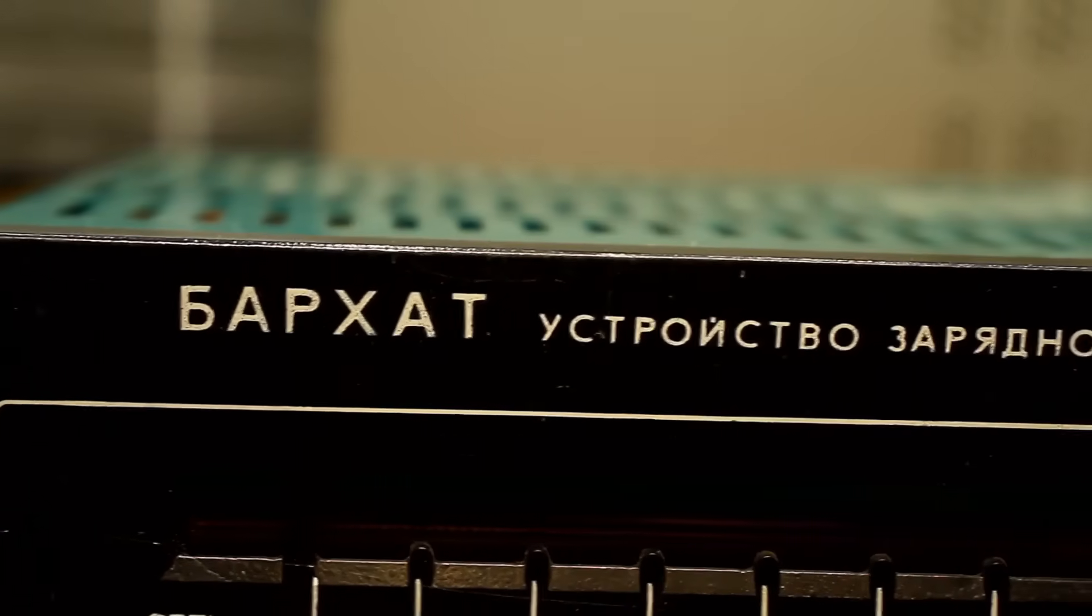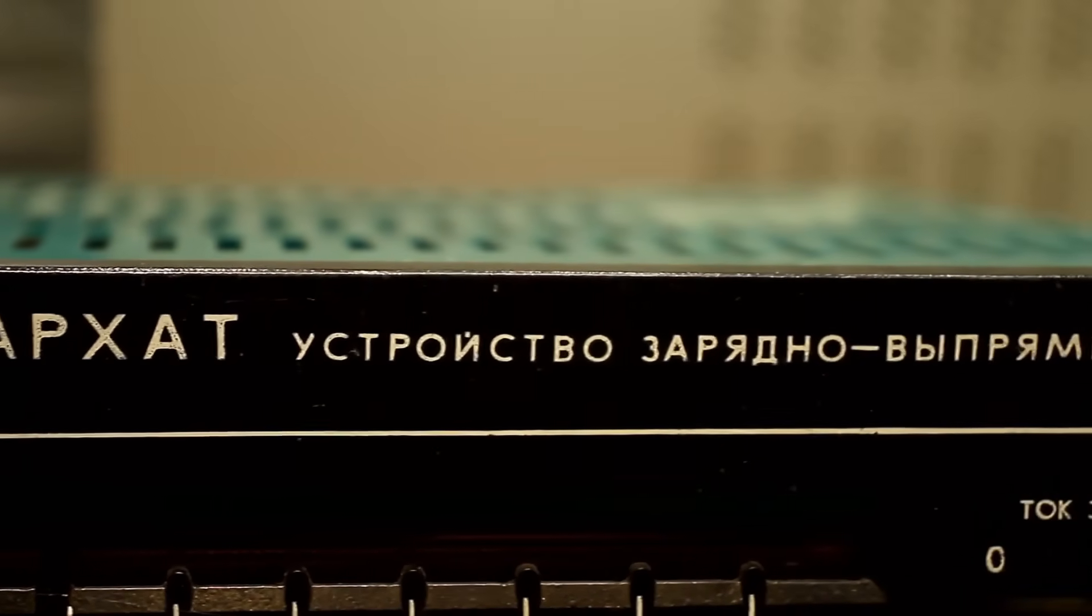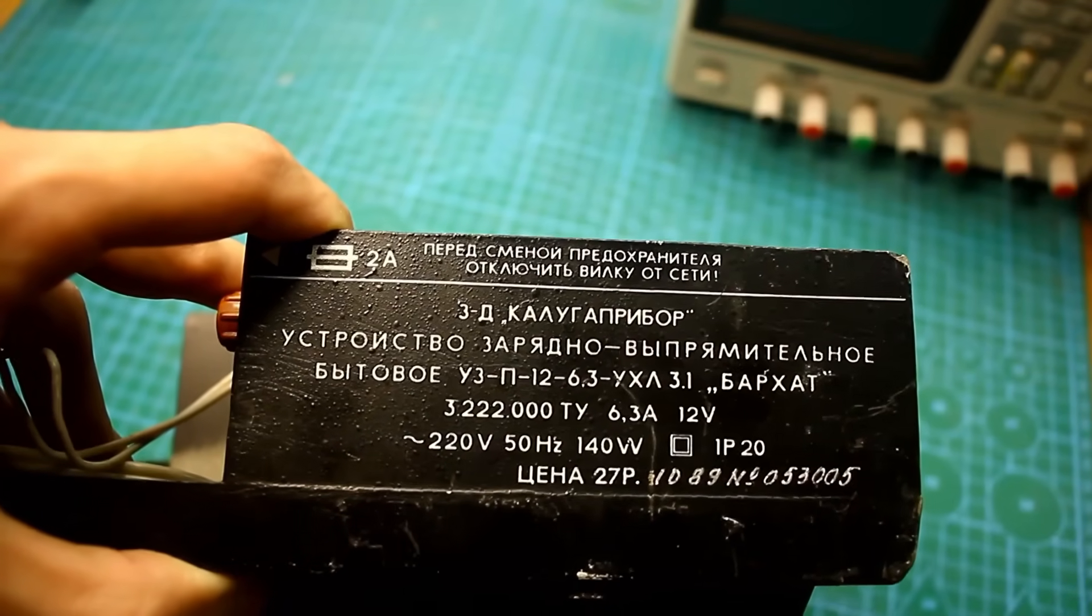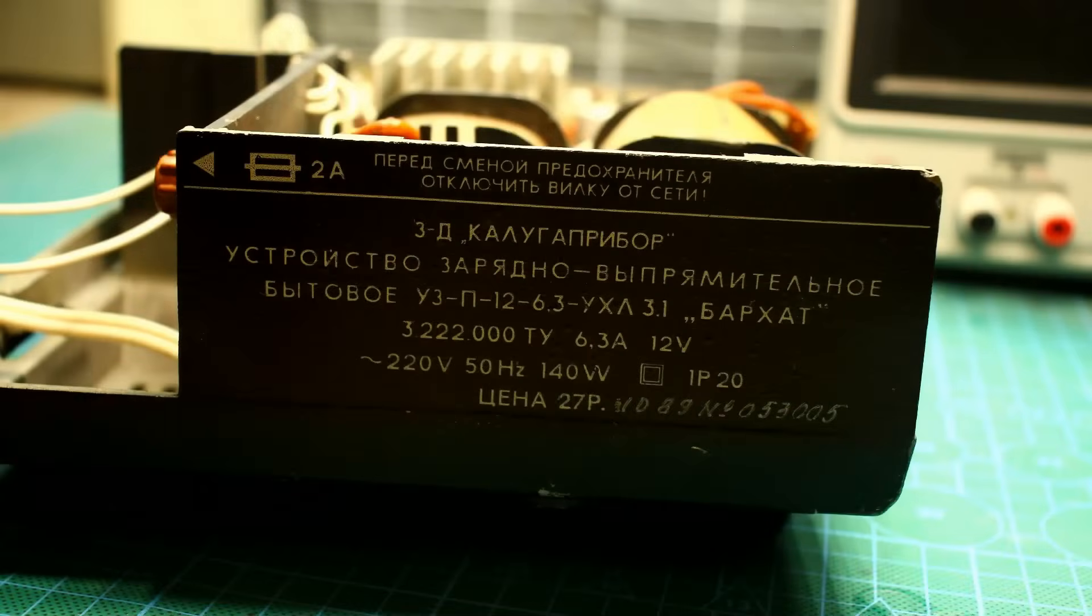The first pages provide general information about the device with technical specifications. It's a charging rectifying device with the velvety name Barhat or UZP, where the last digits indicate that the charger is intended for charging 12V batteries and the maximum charging current up to 6 amps. Then, safety techniques. Well, further on. Yes, dammit, the principle of the circuit's operation with a full description of all processes. Well, tell me who does that nowadays? No one. And who reads instructions in modern technology these days? This is the kind of instruction that's useful and even necessary to read. You can learn a lot.